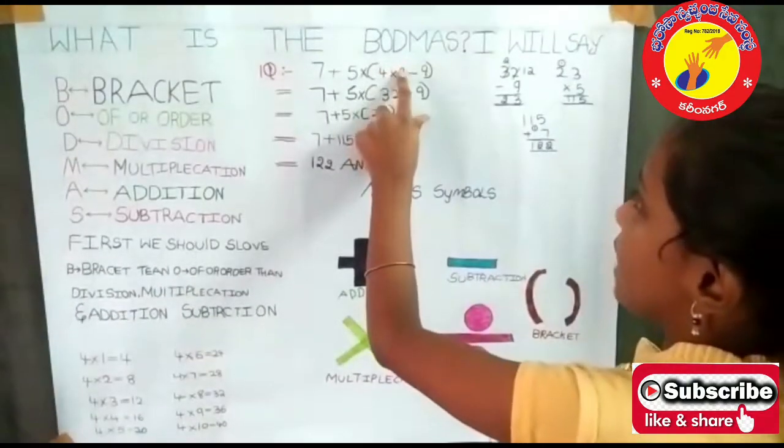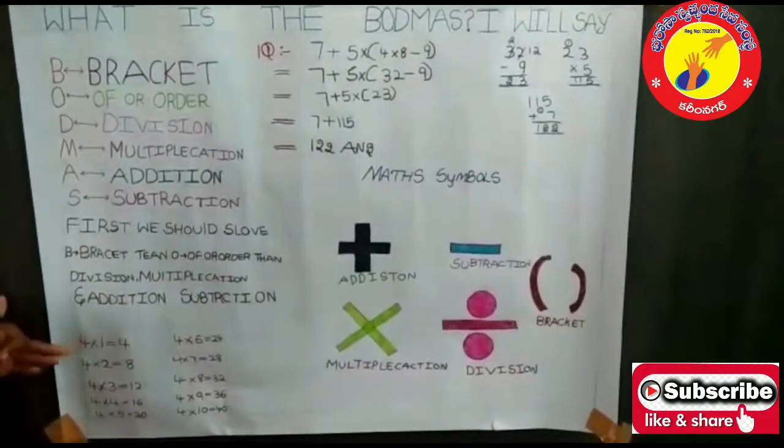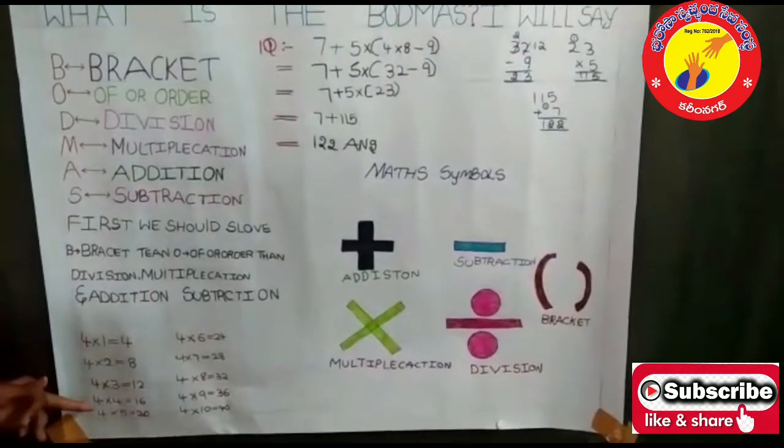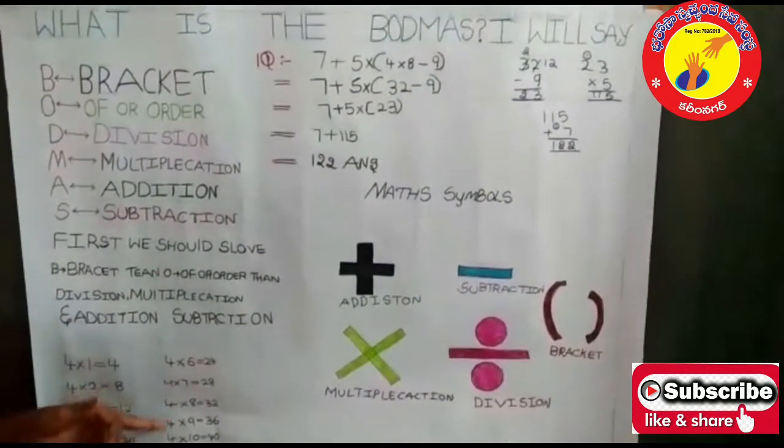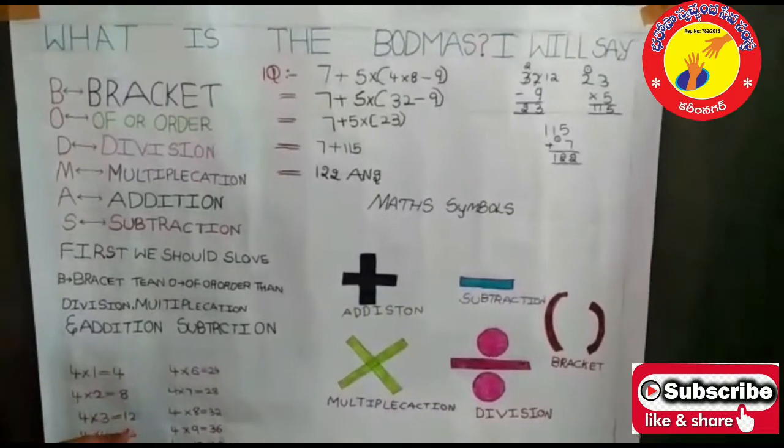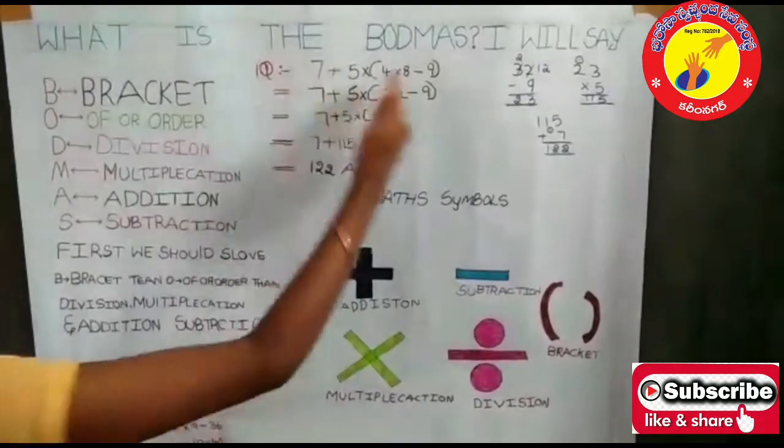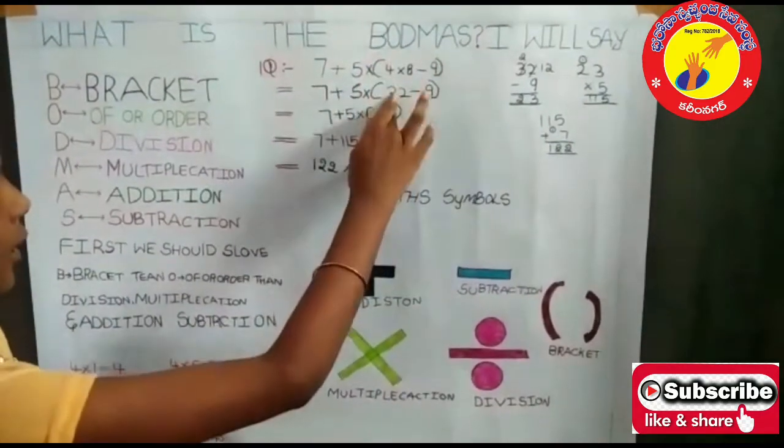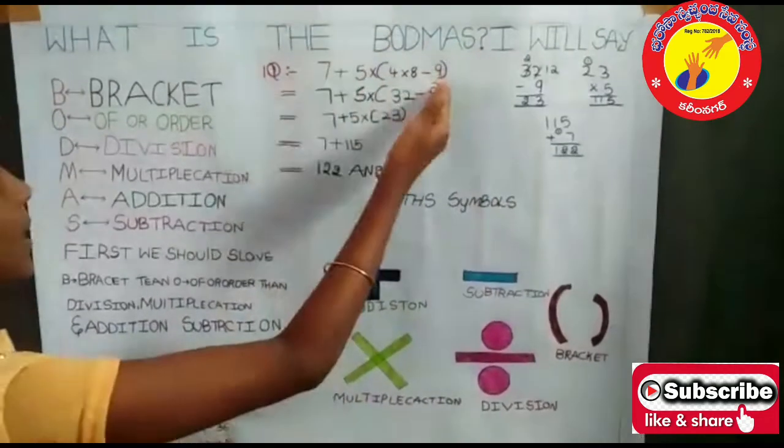So 4 into 8. Here I written the 4 table. So 4 times 8 is how much minus 9. So minus 9 we should write as it is and should keep the bracket.